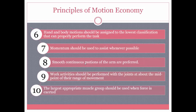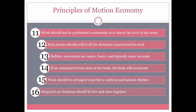Principles nine and ten state that work activities should be performed with joints at about the midpoint of their range of movement, and that the largest appropriate muscle group should be used when force is exerted. The eleventh principle is that work should not be performed consistently at or above the level of the heart, meaning a worker shouldn't be overworking themselves. The twelfth is that rest pauses should reflect all the demands experienced in work, and this goes along with Merle's approximation.